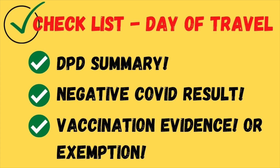On the day of travel, your checklist is: ensure you have a copy of your DPD summary, your negative COVID-19 test result, and your vaccination evidence or exemption. Some people prefer a digital copy, but having a hard copy as well is recommended — just in case you lose your phone, it runs out of battery, or anything else unexpected happens.